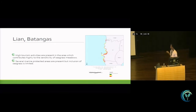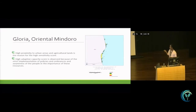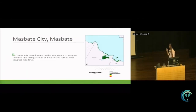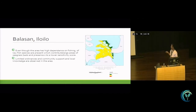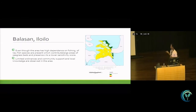Lian, Batangas has high tourism activities because it is a diving spot, which contributes highly to the sensitivity of seagrass meadows, resulting in a high to medium vulnerability. Gloria, Oriental Mindoro has high adaptive capacity due to strict implementation of policies, resulting in low to medium vulnerability. Masbate residents are also well aware of the importance of seagrasses, giving them a low vulnerability. In Eastern Samar, seagrasses are near urban areas, contributing to high vulnerability. In Balasan, Iloilo, even though there is high dependence on fishing, the presence of different seagrass species and fish species contributes to a lower sensitivity score.